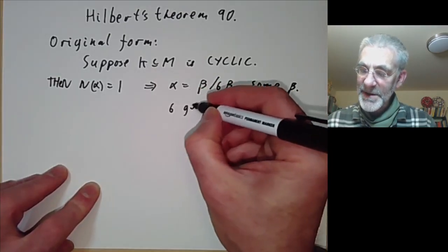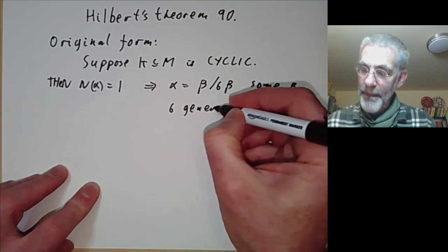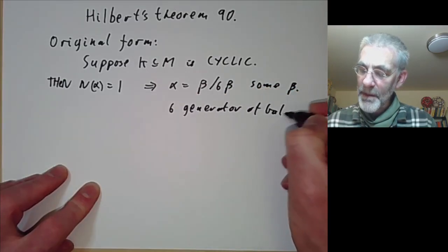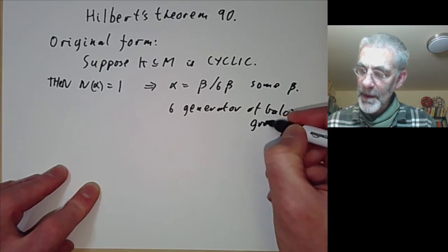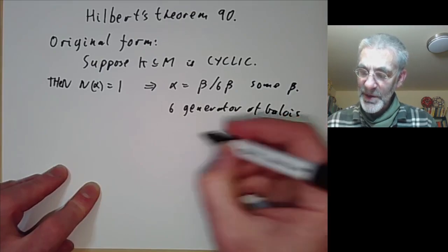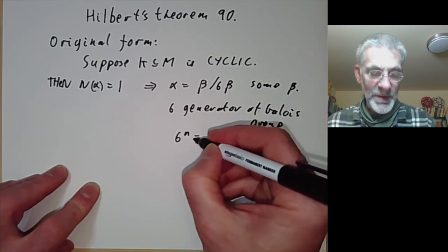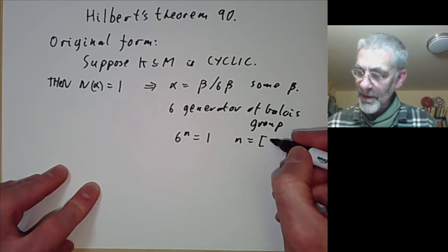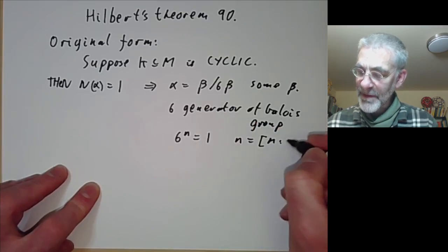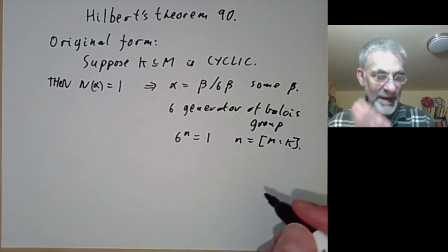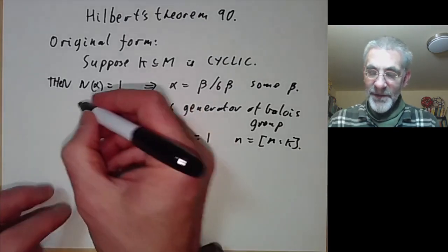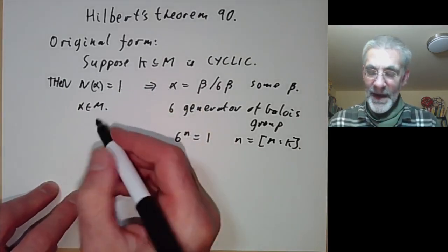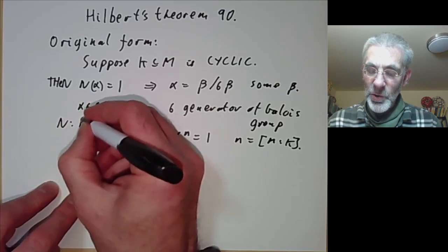Here sigma is a generator of the Galois group, so sigma to the n equals 1 where n is the degree of M over K. And alpha is any element of M, and norm is just the norm.